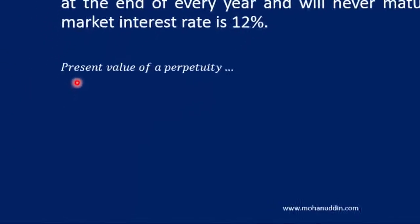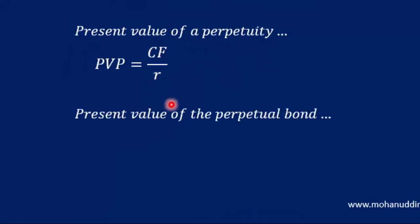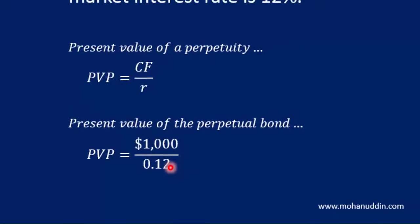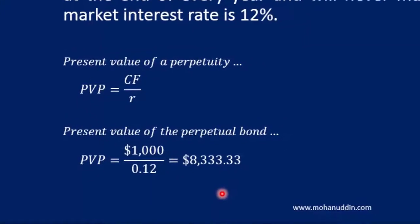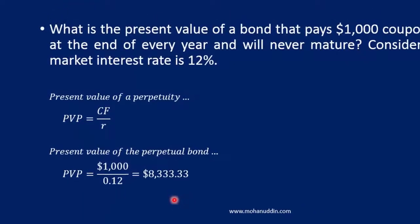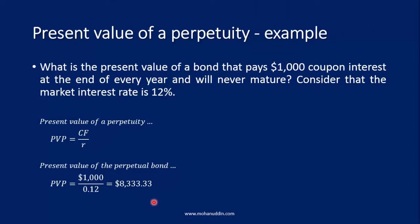The present value of the perpetuity using the formula cash flow over discount rate is: $1,000 divided by 0.12, because the discount rate is 12%. This gives a present value of $8,333.33. That's very simple! Thank you very much for attending the lecture. I hope you have understood how to estimate the present value of a perpetuity, and I hope to see you again in my next lecture.